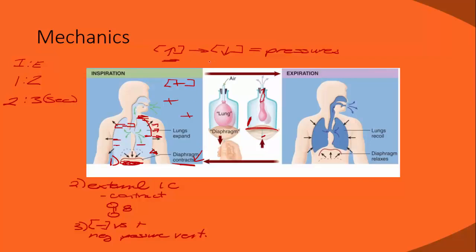Higher pressure to lower pressure — air rushes in from higher pressure outside to lower pressure inside the lungs.